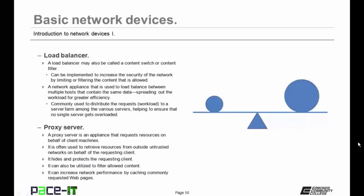Then we have load balancers. A load balancer may also be called a content switch or content filter. Load balancers can be implemented to increase the security of a network by limiting or filtering the content that is allowed to be on the network. A load balancer can be a network appliance used to load balance between multiple hosts that contain the same data, spreading out the workload for greater efficiency. Load balancers are commonly used to distribute requests to a server farm among the various servers, helping to ensure that no single server gets overloaded.